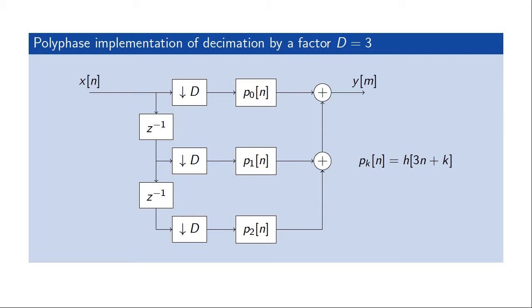This implementation is called a polyphase implementation of the decimator, in this particular case with a downsampling factor of 3. We could extend this to an arbitrary downsampling factor by simply adding branches and carrying out the same reasoning. The filters P of k are related to the original impulse response by reading off the original impulse response at every third sample and shifting depending on which filter we are looking at.